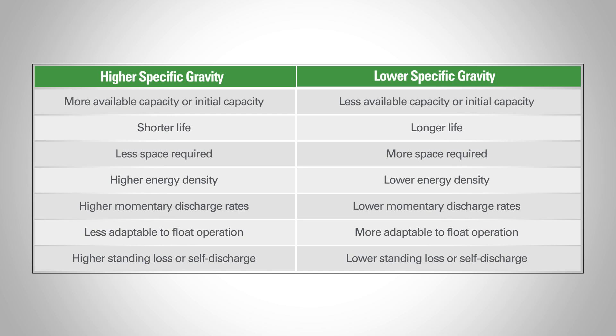Lower specific gravities will give you less available capacity and lower initial capacity, but typically provide longer life. More space is required because lower specific gravity delivers lower total capacity and lower energy density. You'll get lower momentary discharge rates, but lower specific gravities are more adaptable to float applications and result in slower self-discharge rates.